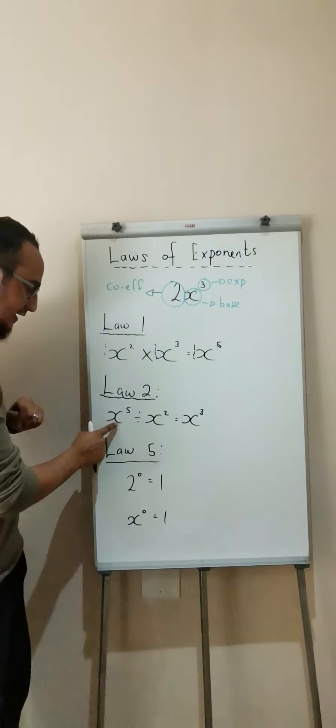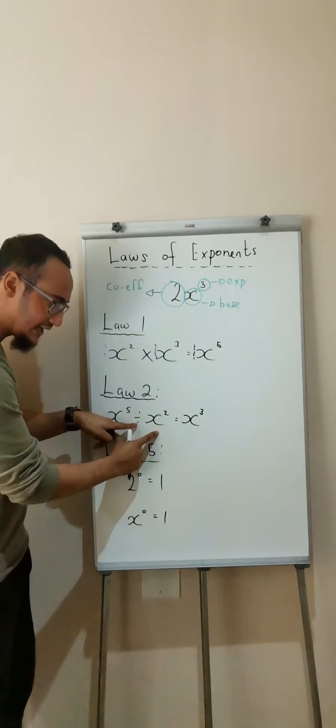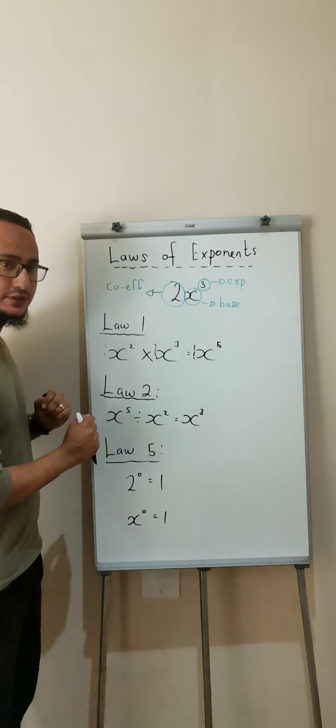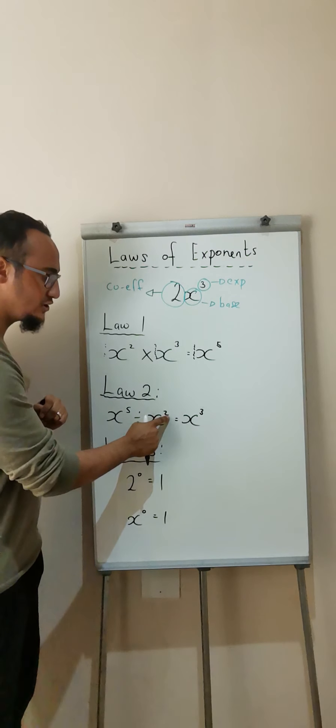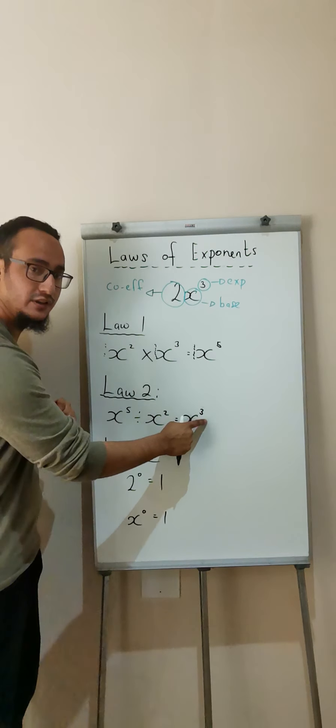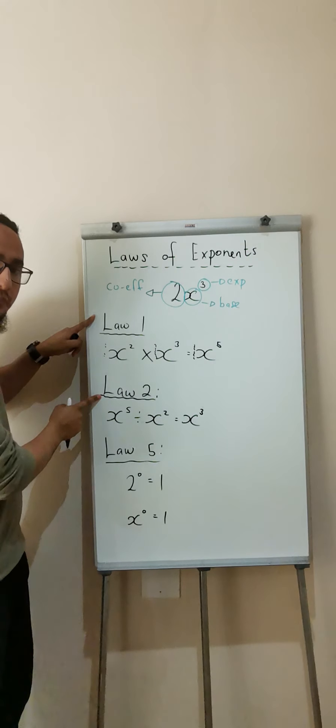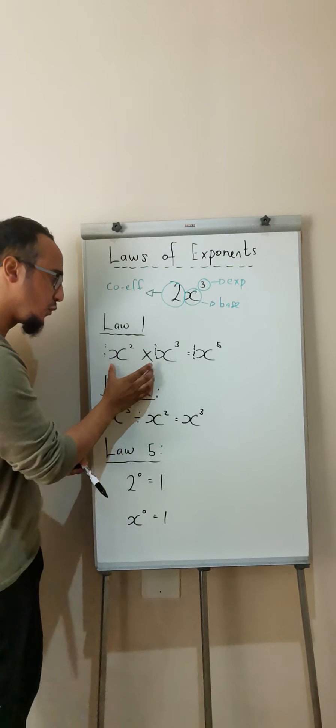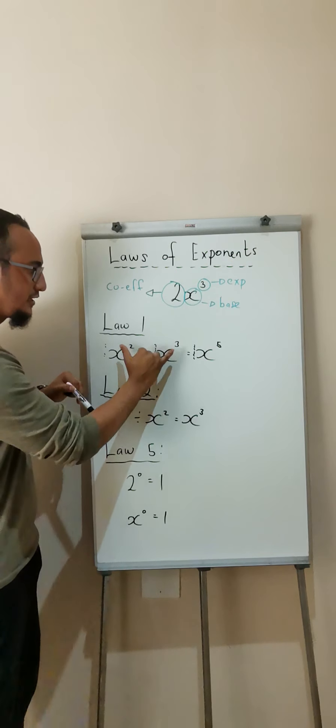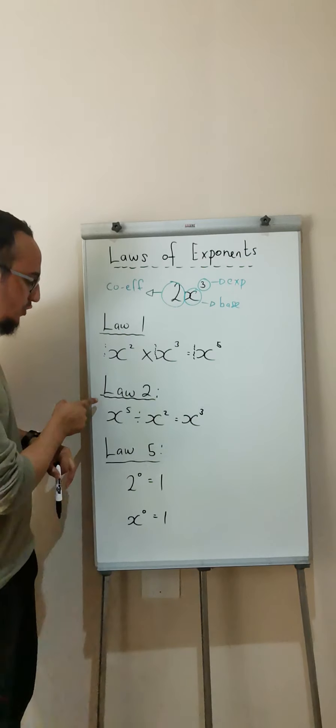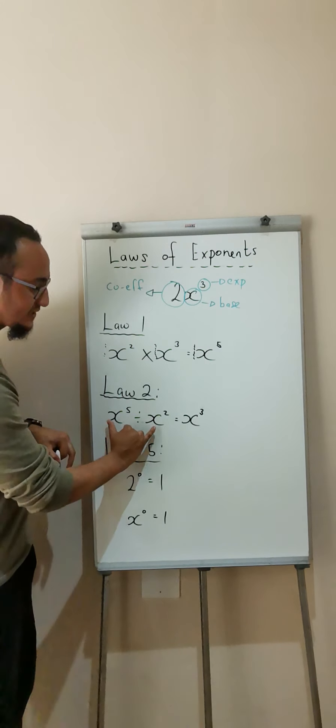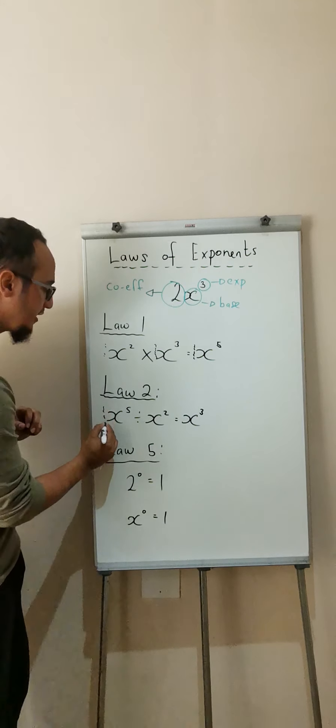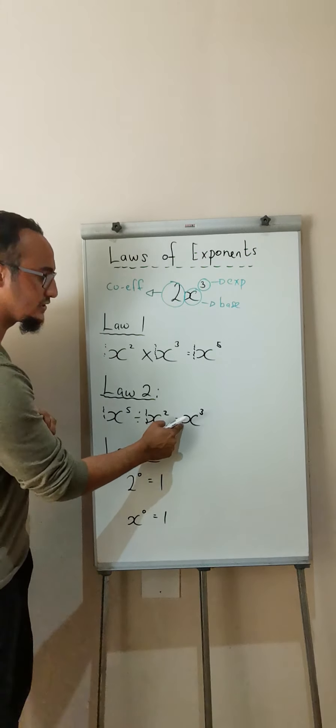Law number 2 is when I'm dividing and I have the same base or the same letter, my exponents will subtract. So 5 minus 2 is equal to 3. Notice that law number 1 and law number 2 are opposites of one another. Law number 1 says when I'm multiplying and I have the same base, the exponents add. Law number 2 says when I'm dividing with the same base, I subtract my exponents. And the same happens with 1 divided by 1 is equal to 1.